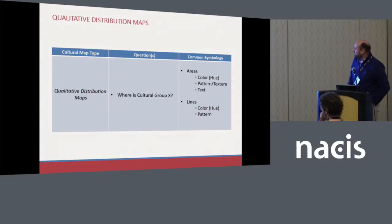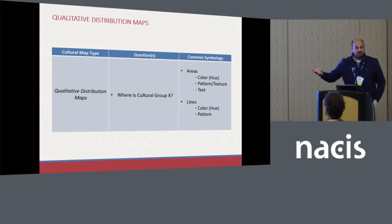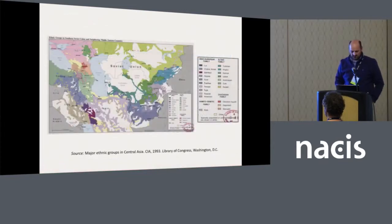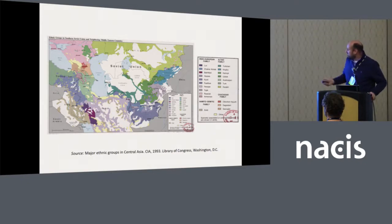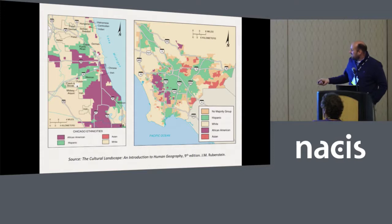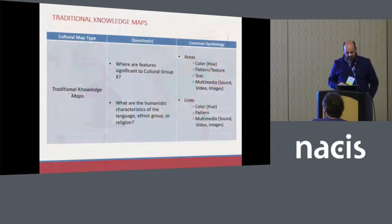Qualitative distribution maps address the question: where is cultural group X? Looking at the symbology for these, area and line symbols are used — area being the most common — with qualitative visual variables such as color hue, pattern, and texture. Sometimes text is added as well. Here's one example looking at major ethnic groups in Central Asia — pretty standard use of different colors representing different ethnic groups. Another example from a human geography textbook shows Chicago on the left and Los Angeles on the right, using color to show the dominant ethnic group — showing not how much, but just where the dominant group is.